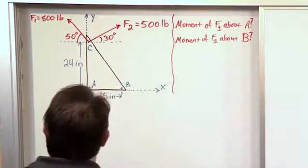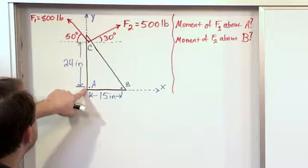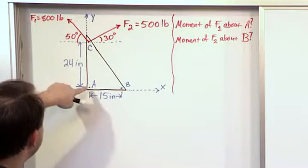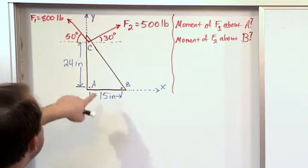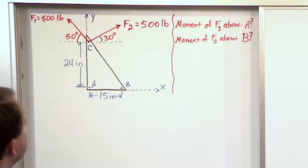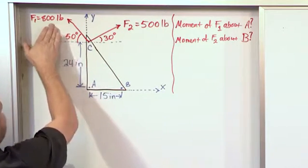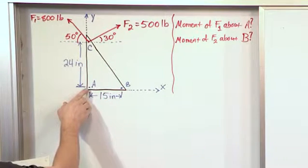So we're already breaking the problem apart. How much of a moment does F1 impart about point A to turn it? And how much of a moment is F2 going to impart on B? Before doing anything else you should realize that if we're just looking at the moment that F1 is producing about A,